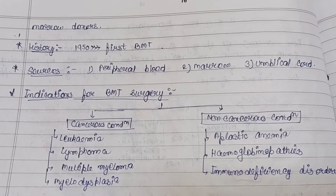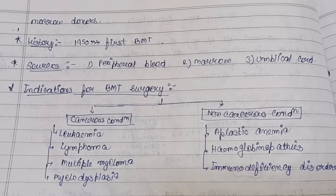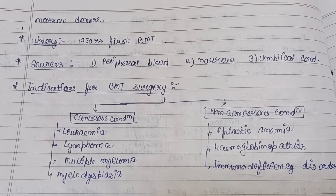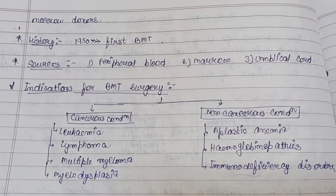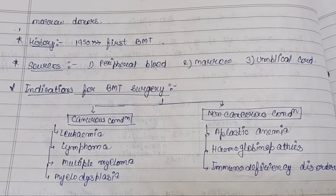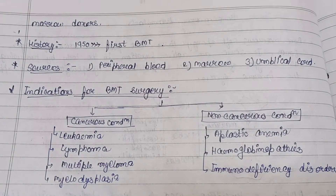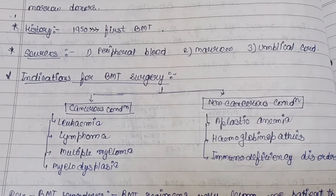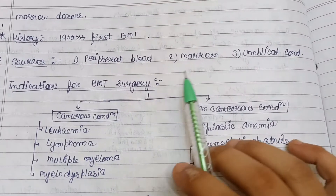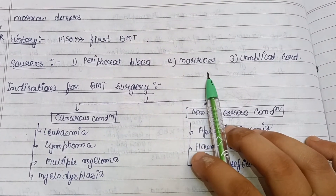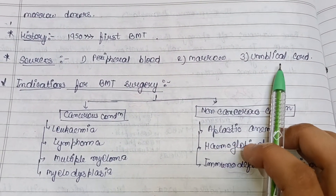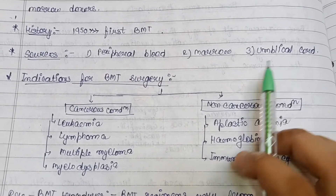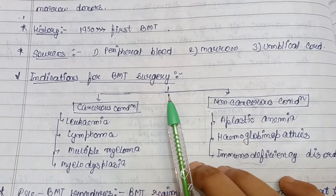In 1950, the first bone marrow transplantation was performed. The sources from which we can obtain bone marrow are: peripheral blood, the marrow itself, and the umbilical cord.